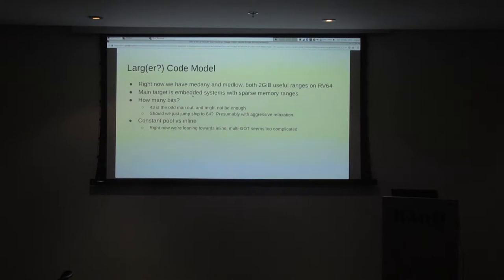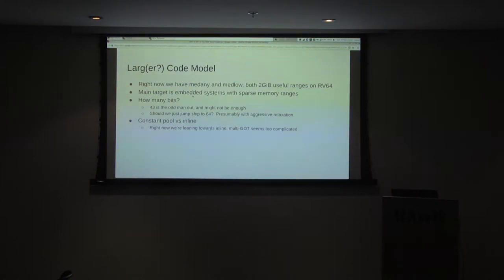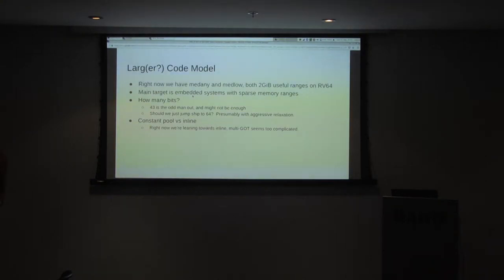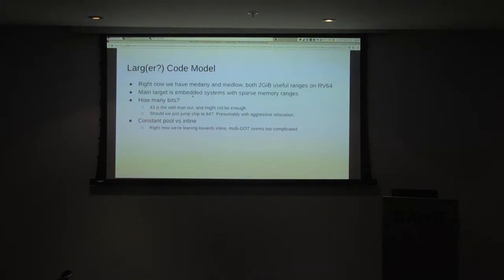Large code model: this is something that's started to come up for us recently. We have medany and medlow, which are both effectively two-gig ranges on RV64. We have a lot of embedded targets that have small memory regions and people want to put stuff all over them — it doesn't work in two gigs, especially on the big systems. We've had a bunch of discussions internally. The first thing to think about is how many bits — 43 is the next one up, that's one more instruction, but it's kind of odd when you look at the patterns in terms of what relocations you use. The other option is just to jump to 64-bit relaxed stuff.